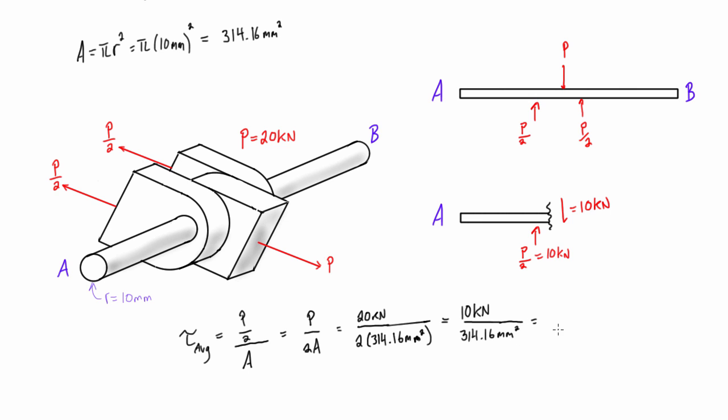get 0.0318—that is kilonewtons per millimeter squared. And the easiest way that I like to do this, to get this into some form of pascals, is I'll just multiply this by thousands to get this in newtons. So that's just going to give us 31.8 newtons per millimeter squared. And if you remember, newtons per millimeter squared is